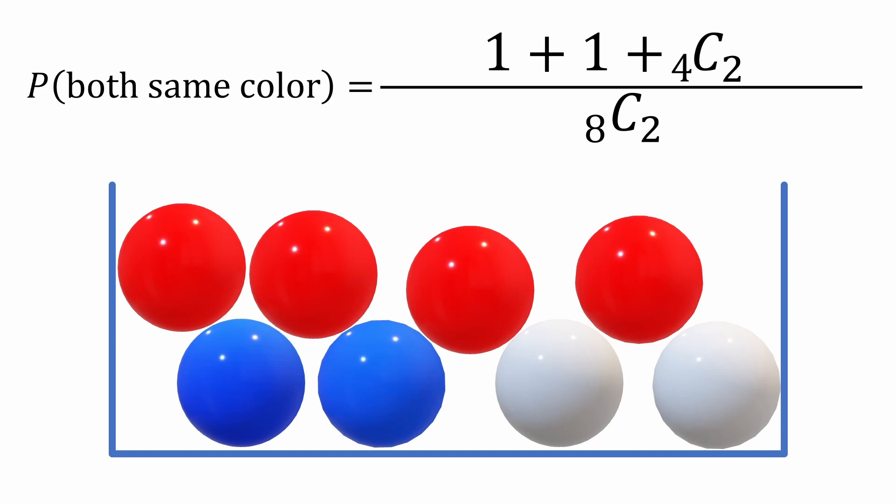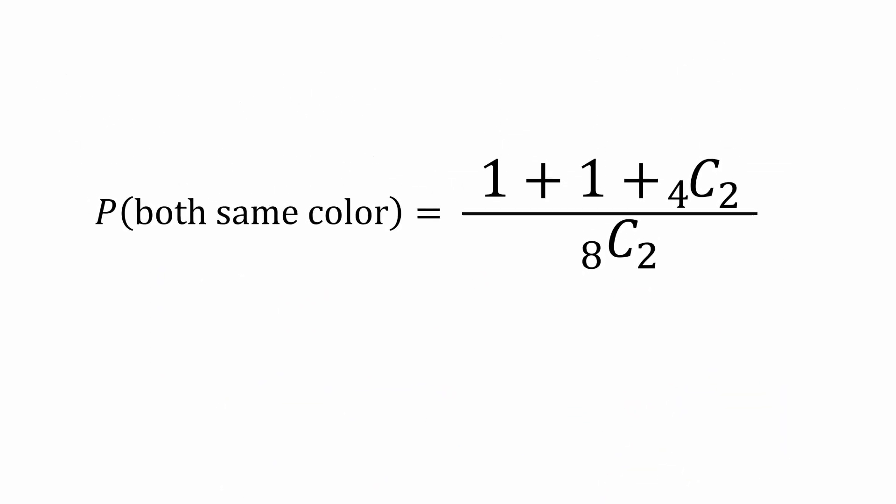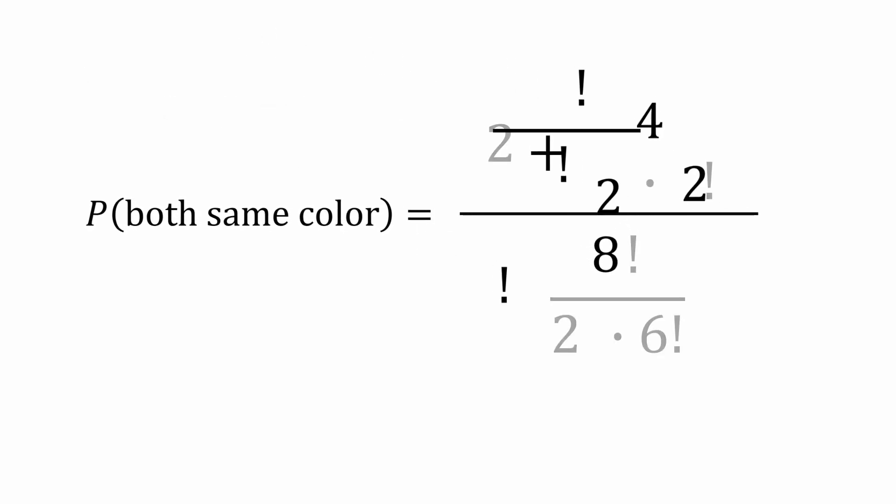Now let's simplify our probability expression. We'll recall that the combination formula nCr is n factorial divided by r factorial times n minus r factorial. So our probability looks like this now.